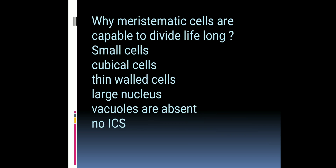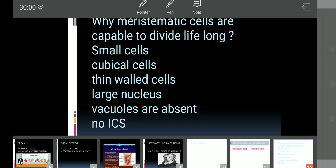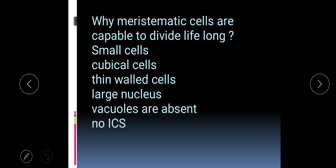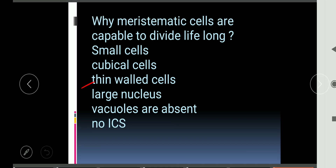Now we will see why meristematic cells are capable of dividing lifelong. First, meristematic cells are small in size — small size makes it easy to divide, just like a matchstick is easier to divide than a tree trunk. Second, meristematic cells are cubical in shape, so they can be divided through any plane, which helps them divide lifelong.